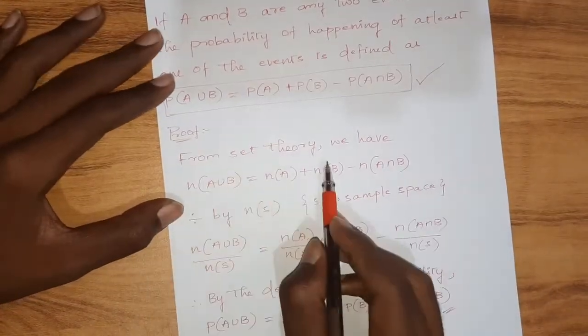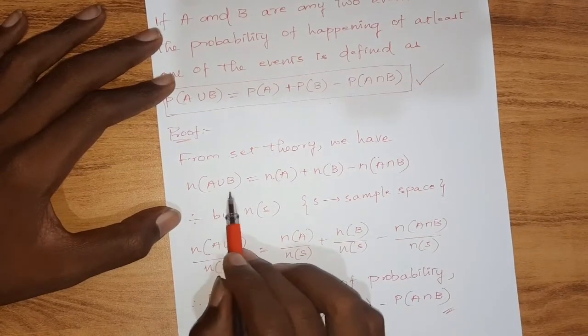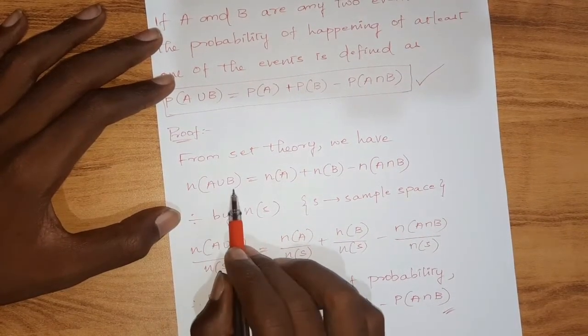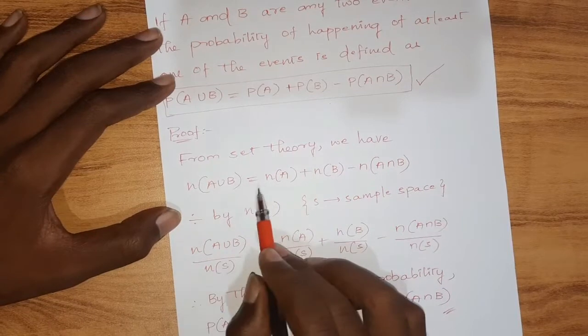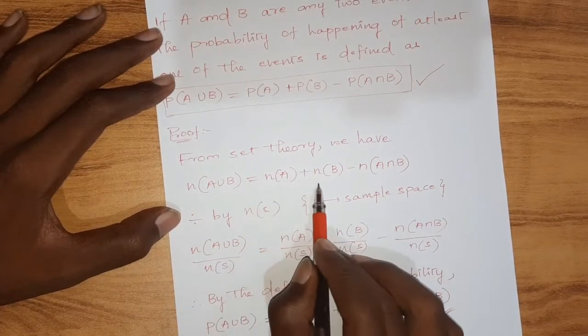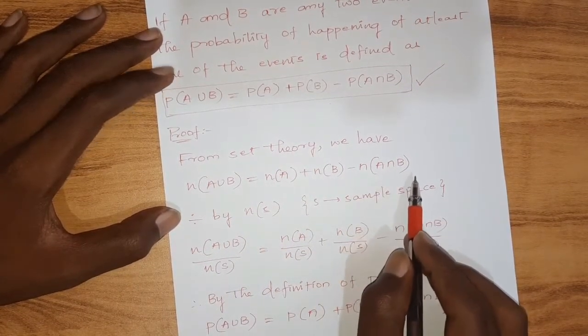From set theory, we have N of A union B equals N of A plus N of B minus N of A intersection B.